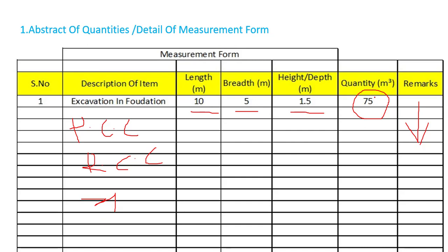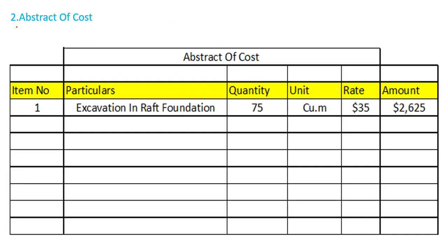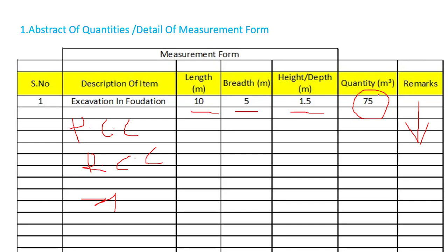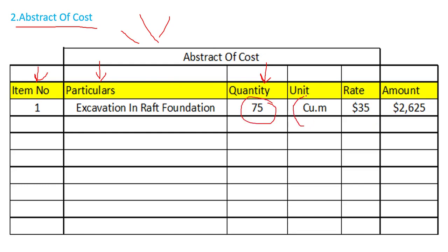After finding the total quantity of each particular item, we need to create one more sheet called Abstract of Cost. In the Abstract of Cost, the first column is item number — for example, excavation, PCC, RCC. Then we have particulars with detail regarding that item. Then we put the quantity we already found from the detail of measurement form, followed by the unit for that item. For excavation work, the unit is cubic meter or cubic feet. Then we give the unit rate, which you can find from the schedule of rate from the government department. Finally, we can find out the cost of that particular item.